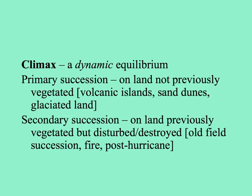Primary succession occurs on new land — land not previously vegetated — like volcanic islands that arise made from lava, sand dunes from piles of sand on the edge of oceans and lakes, and land left behind as glaciers recede. Then there's secondary succession on land previously vegetated but somehow disturbed or the vegetation destroyed, such as after agriculture fields are abandoned, after a fire, or after a major disturbance like a hurricane.